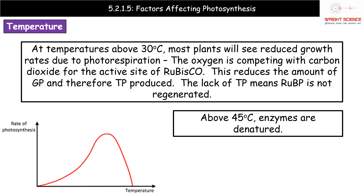If we go higher still, up to about 45 degrees or more, the enzymes will be denatured. The bonds holding the tertiary structure of the enzyme in its specific shape — giving the active site its specificity — are disrupted by the higher temperatures, and therefore the active site is no longer complementary to the substrate.